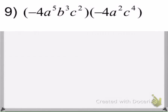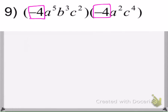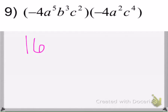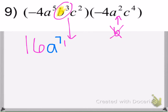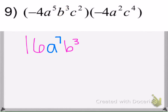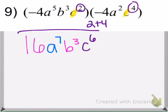Last example: two parentheses touching means multiplication. The negative 4 times negative 4 equals positive 16 — they're coefficients with no exponent. For the a's: 5 plus 2 is 7, giving a to the 7th. One expression has a b squared but the other doesn't, so we just bring down b squared. For the c's: 2 plus 4 is 6, giving c to the 6th. Final answer: 16a to the 7th, b squared, c to the 6th.